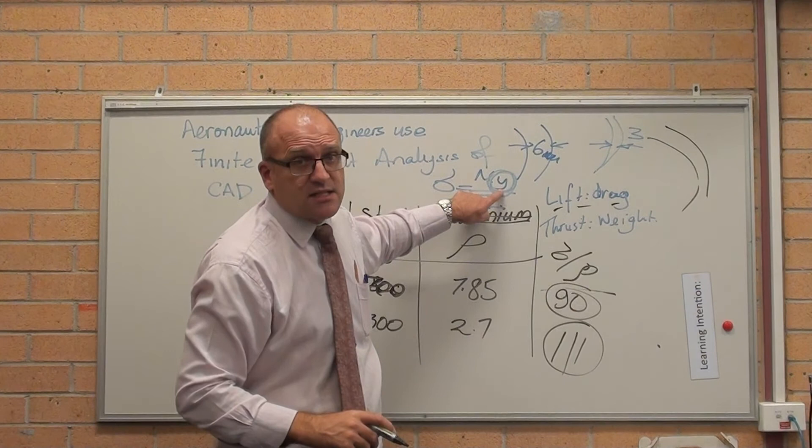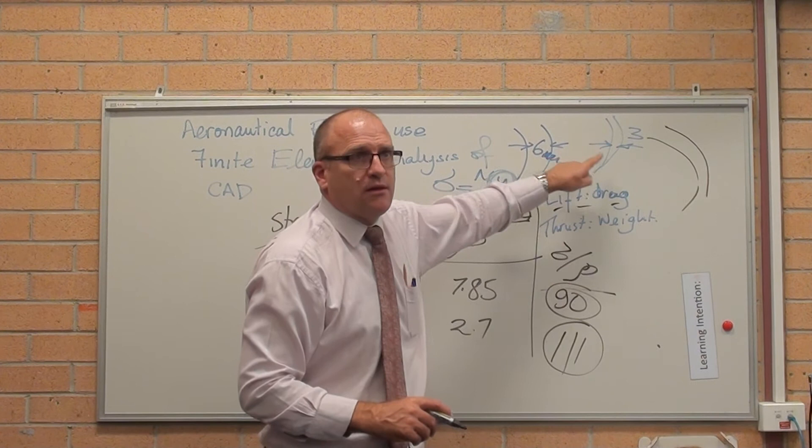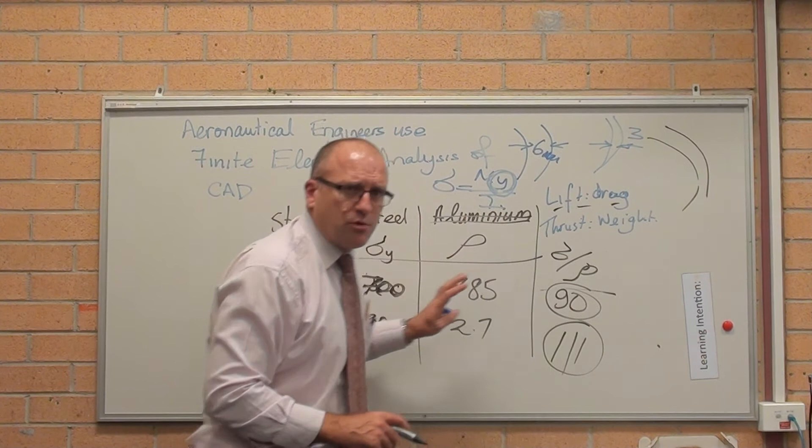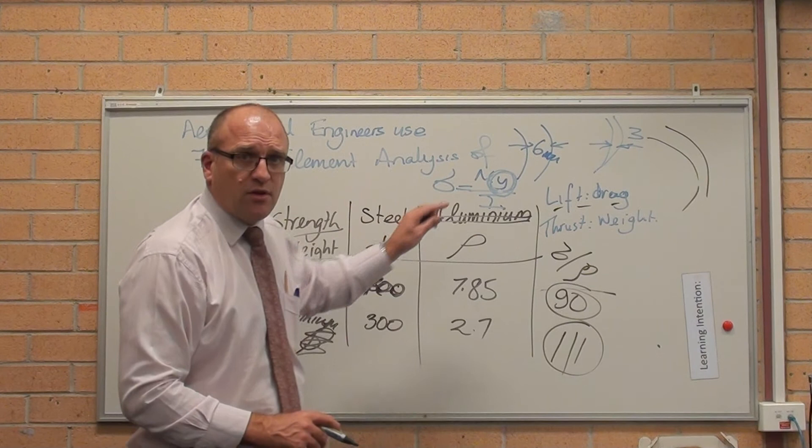Aluminium has a lot better buckling strength than steel. So they use aluminium in aircraft not because of strength to weight ratio, but because it's thick enough to resist buckling while maintaining an acceptable weight.